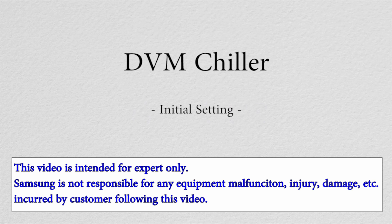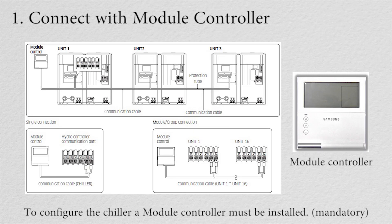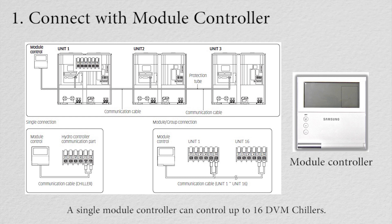This video will explain the settings required for initial operation of the DVM chiller. To configure the chiller, a module controller must be installed. A single module controller can control up to 16 DVM chillers.